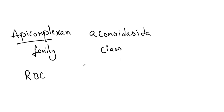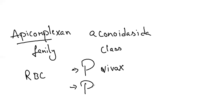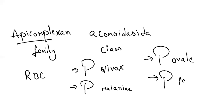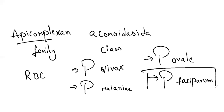We will talk specifically about malaria. Plasmodium is the specific species that causes the disease named malaria. When the female Anopheles mosquito infects or bites a mammal, malaria occurs. There are four species of Plasmodium that cause malaria: Plasmodium vivax, Plasmodium malariae, Plasmodium ovale, and Plasmodium falciparum. Plasmodium falciparum is the most dangerous of all four species.